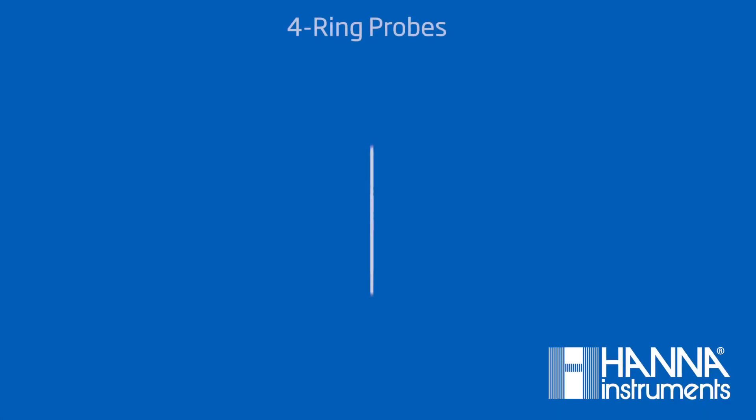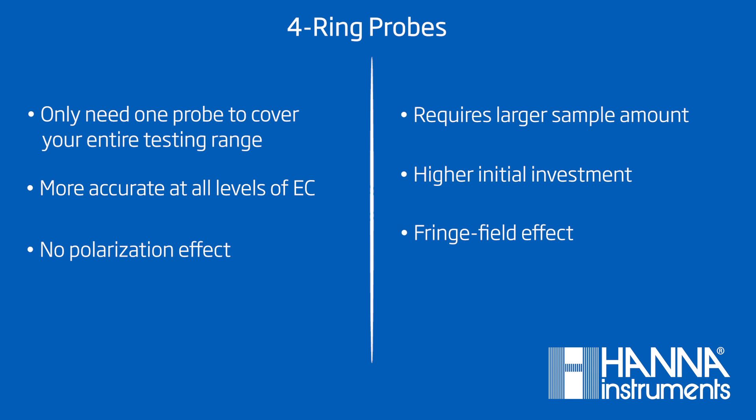When using a four-ring probe, you only need one probe to cover your entire testing range, up to one siemen per centimeter. You also do not have to worry about the polarization effect. The construction of this probe, with how the rings are situated, causes a constant field of current to be maintained around the rings. It acts as a shield.